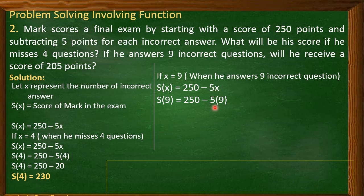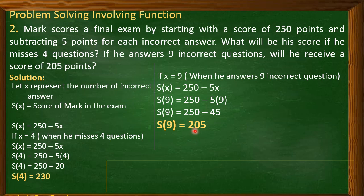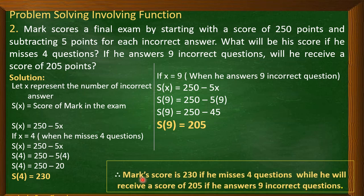When x = 9: S(9) = 250 - 5(9) = 250 - 45 = 205. Therefore, Mark's score is 230 if he misses 4 questions, while he receives a score of 205 points if he answers 9 incorrect questions.